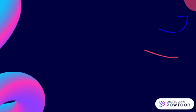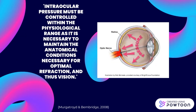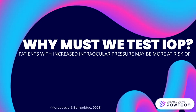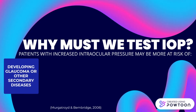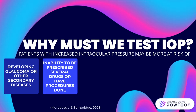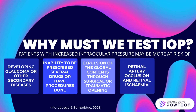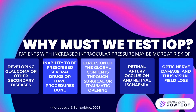As stated in an article by Murgatroyd and Benbridge in 2008, intraocular pressure must be controlled within the physiological range as it is necessary to maintain the anatomical conditions required for optimal refraction and thus vision. There are various reasons why intraocular pressure must be tested. Patients with increased pressure may be more at risk of developing glaucoma or other secondary diseases, an inability to be prescribed several drugs or have procedures done, expulsion of the globe contents through surgical or traumatic opening, retinal artery occlusions and retinal ischemia, and optic nerve damage.